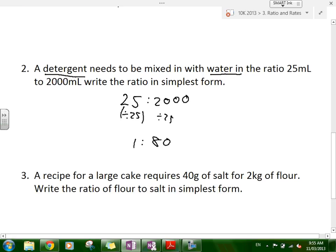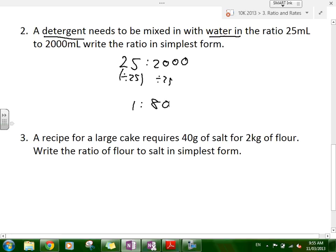Now, the next one we have here is that a recipe for a large cake requires 40 grams of salt for 2 kilograms of flour. Write the ratio of flour to salt in simplest form. Now, what's the first thing that we notice about these quantities? They're different. Well, they're both weights. But what do we notice about them? What's different? Yeah, one's gram and one's kilogram. So what do we have to do? That's right. We need to convert them to the same units.